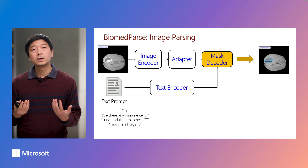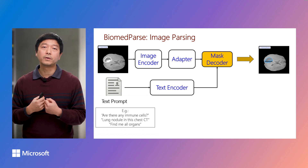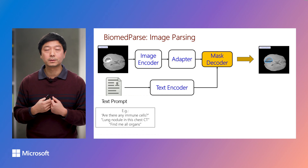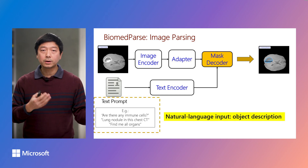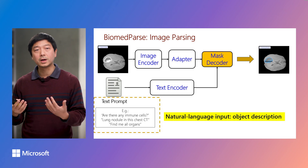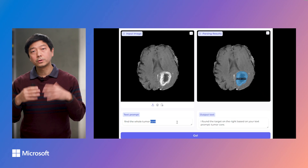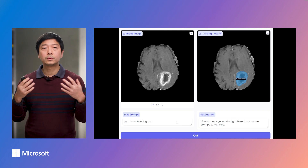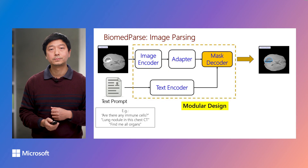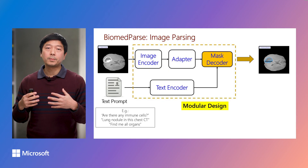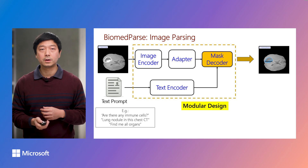In this talk, we introduce BiomedParse, which adopts image parsing as a unifying framework for holistic image analysis. The input to the model is simply a natural language description of the object for analysis. Through this unified text prompt, the model automatically carries out recognition, detection, and segmentation jointly based on the object description alone. On the modeling side, BiomedParse adopts a modular design and can incorporate arbitrary image encoder, adapter, and decoder.